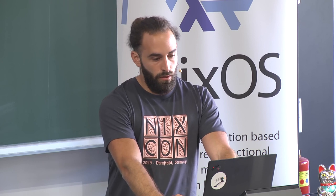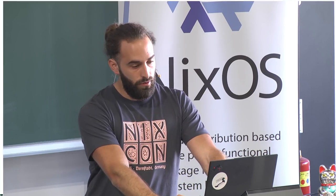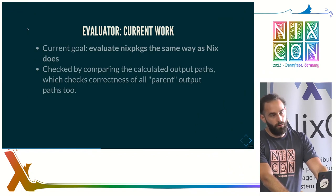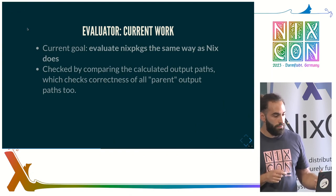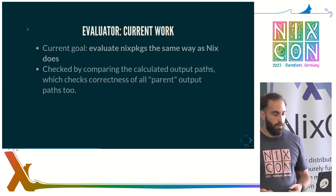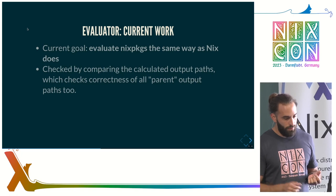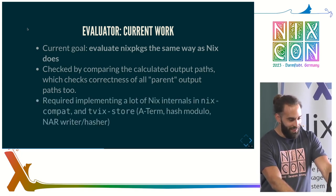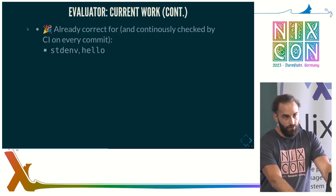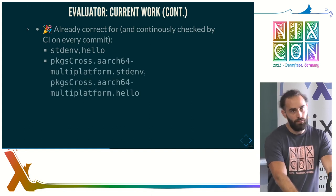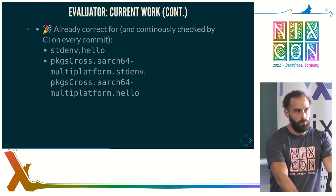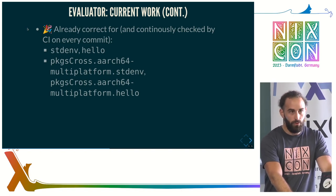The current goal is we evaluate Nix Packages the same way as Nix does. We compare by calculating the output paths, which also checks correctness of all parent output paths. The creation of those build recipes allows us to check for equality of the evaluation. It took a lot of effort to get right, but it is all there now. It works for stdenv, it works for hello, it works for a bunch of cross paths. There are still some interesting edge cases, but these are known, and we do not regress on the existing ones because we now have CI for it.